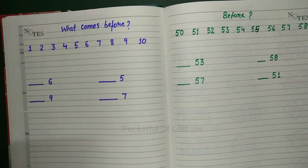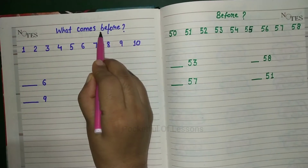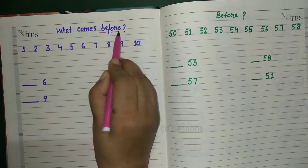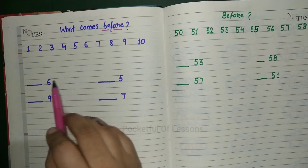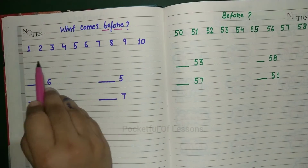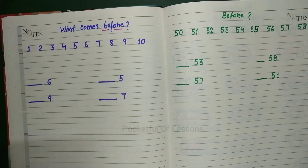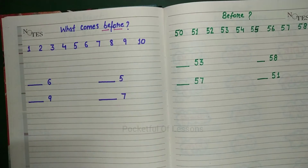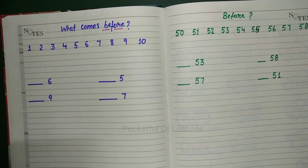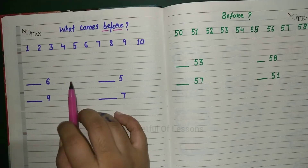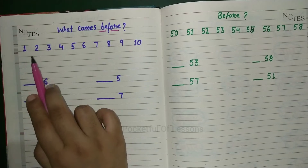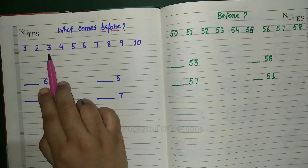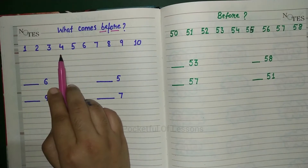Before means before. So here you can see the numbers. Let's read them first: 1, 2, 3, 4,